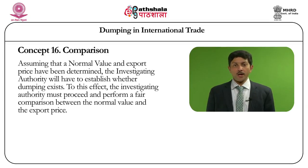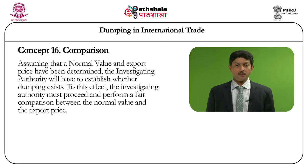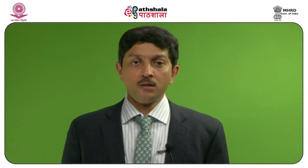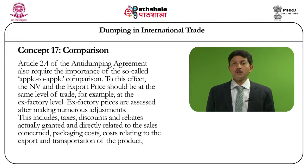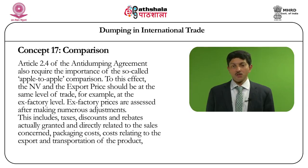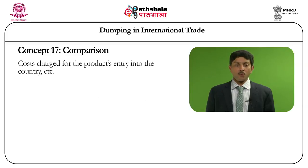Assuming that the normal value and the export price have been fairly determined, the investigating authority will have to establish whether dumping exists or not. To this effect, the investigating authority must perform a fair comparison between the normal value and the export price. Article 2.4 of the Anti-Dumping Agreement also requires the so-called apple-to-apple comparison. The normal value and the export price should be at the same level of trade, for example at the ex-factory level. The ex-factory prices are assessed after making numerous adjustments, including taxes, discounts and rebates directly related to the sales concerned, packaging costs, costs related to export and transportation of the product, and costs charged for the product's entry into the country.